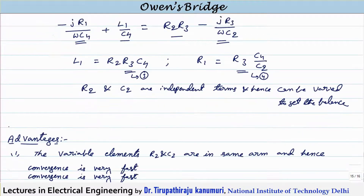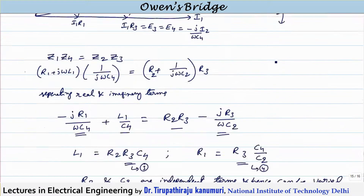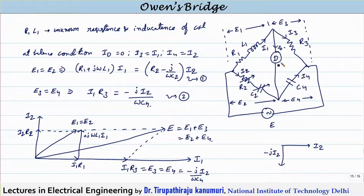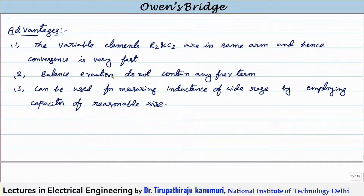Let us see the advantages of this method. First, the variable elements R2 and C2 are in the same arm, so varying either one leads towards convergence, and convergence will be very fast. Second, the balance equations do not contain any frequency term. Third, this bridge can be used for measuring inductance over a wide range by employing a capacitor of reasonable size.